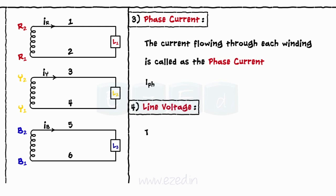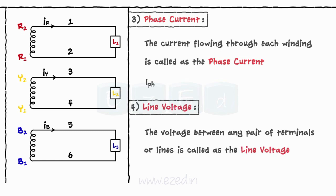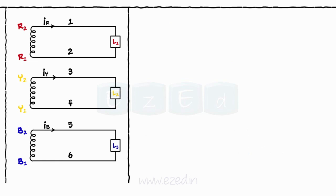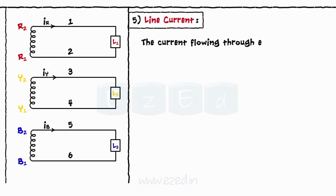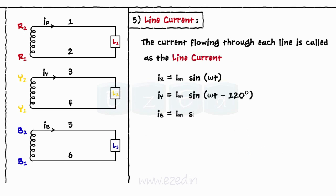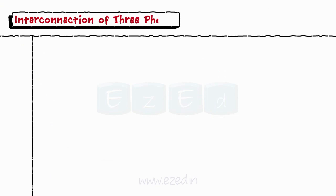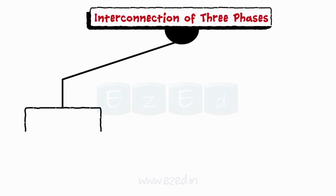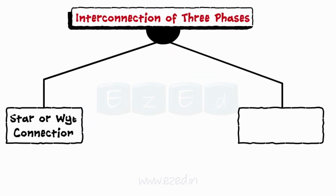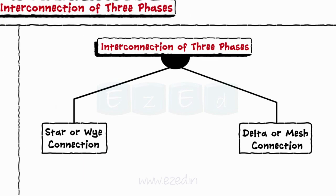The voltage between any pair of terminals or lines is called the line voltage. Vry, Vyb, and Vbr are the line voltages. The current flowing through each line is called the line current. Ir, Iy, and Ib are the line currents, represented mathematically by the following equations. There are two main forms in which these windings are connected: the star or Y connection and the delta or mesh connection.